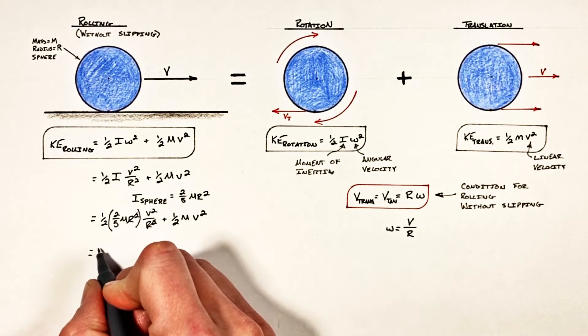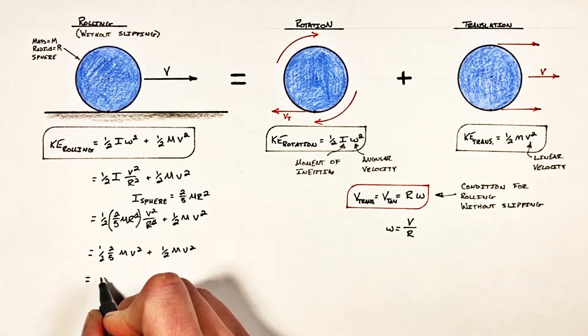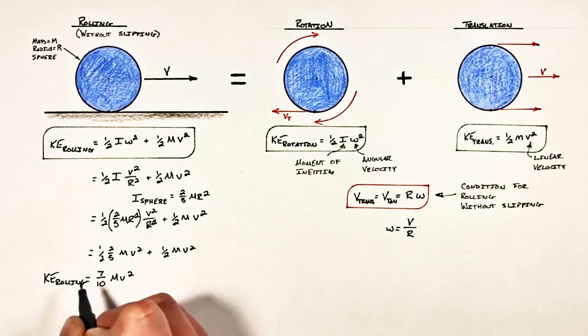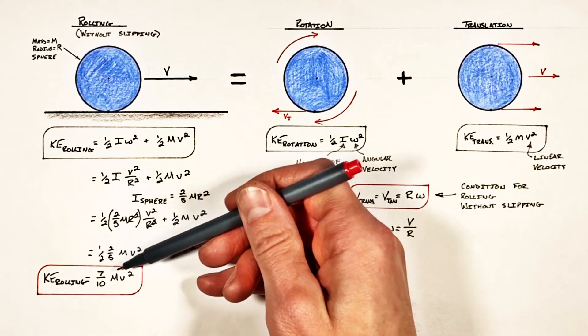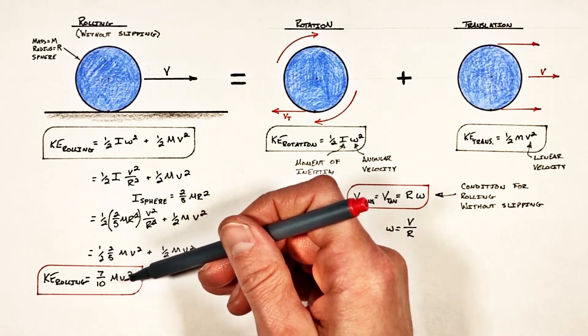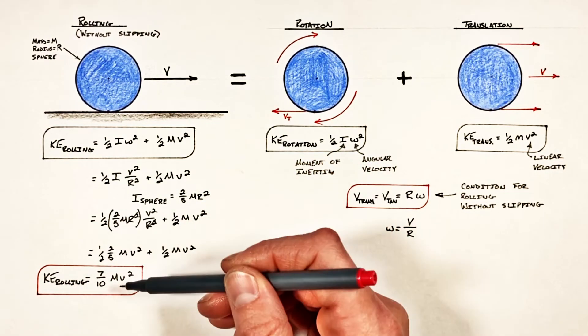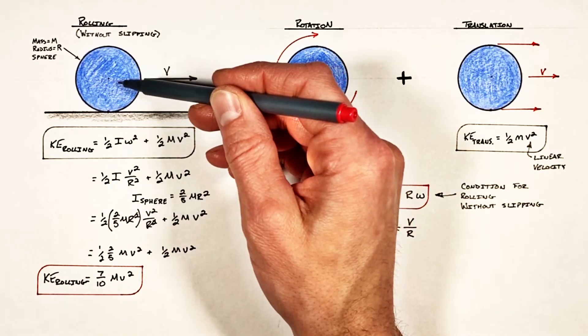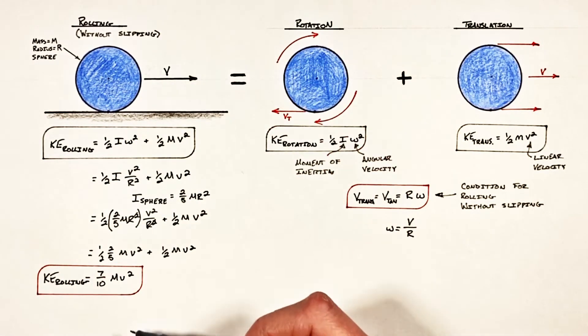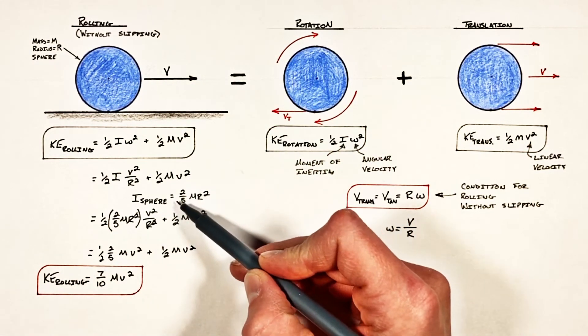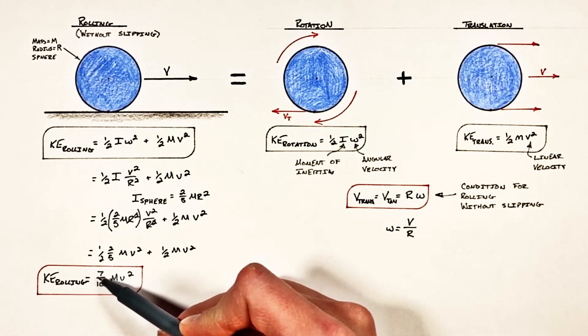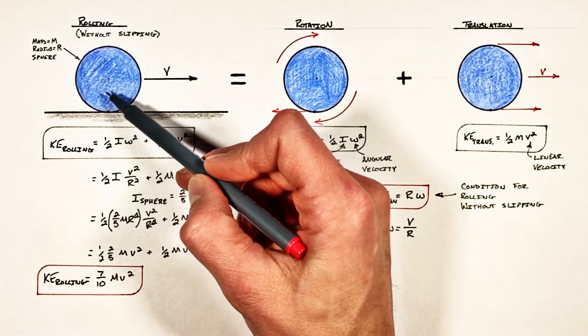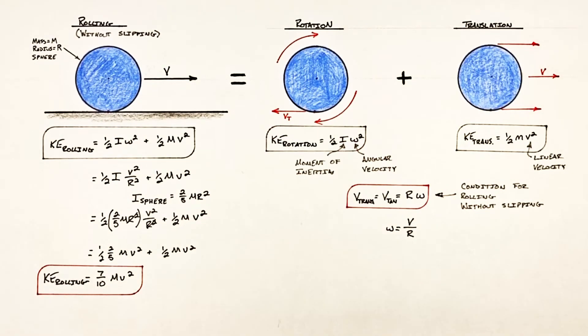Cleaning this up a bit, we can see the kinetic energy of our rolling sphere is given by seven tenths mv squared. So according to this equation, the mass of this sphere affects the kinetic energy, as does the shape, because this two fifths carried through and gave us the seven tenths. But the size of this sphere, its radius, did not matter at all.